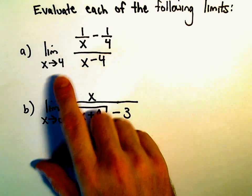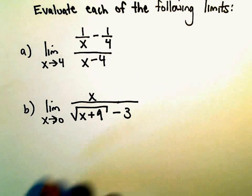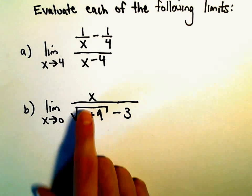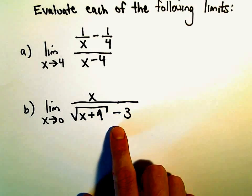We've got the limit as x approaches 4, 1 over x minus 1 fourth over x minus 4. And then the limit as x approaches 0 of x over the square root of x plus 9 minus 3.